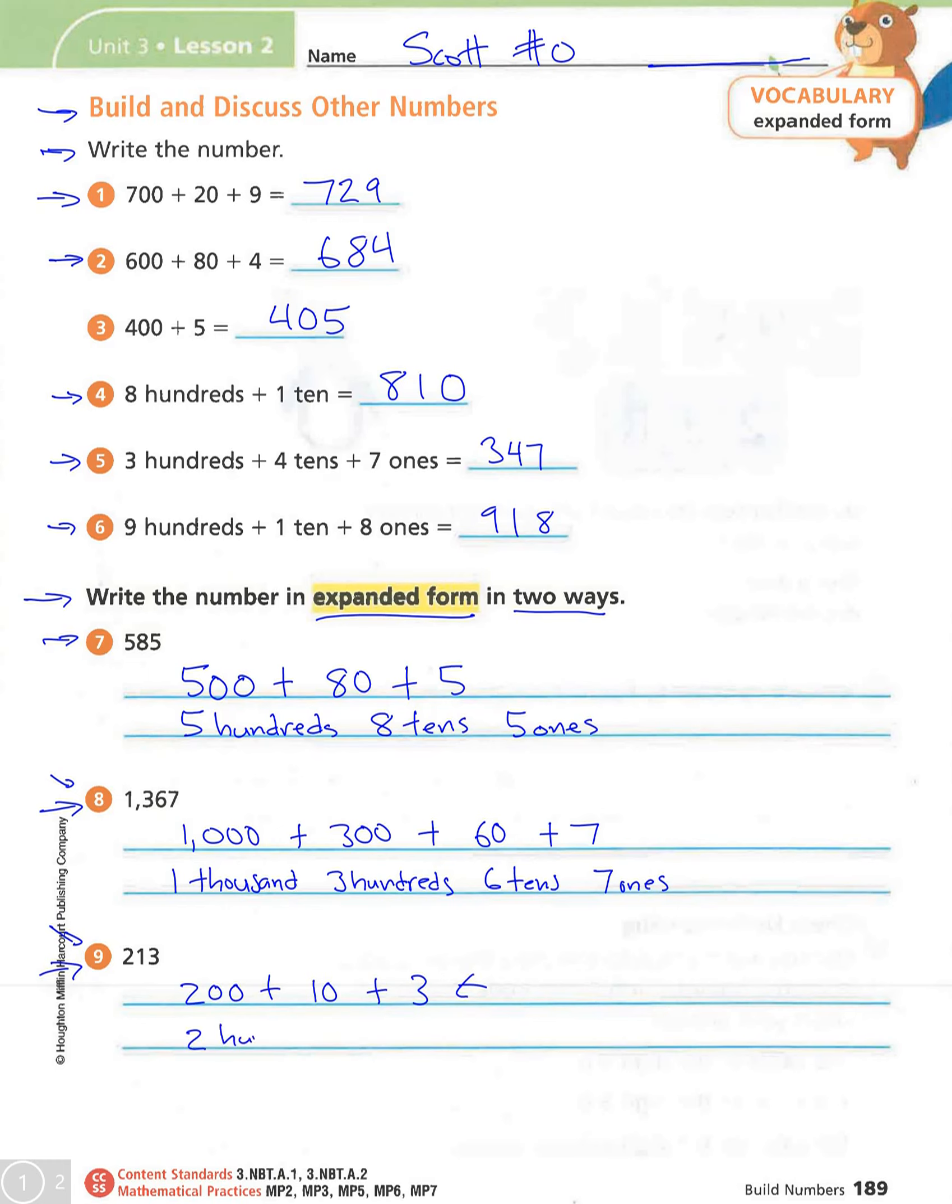So again, I see 2 hundreds, 1 ten, 3 ones. All right, so now let's go on to the next page.